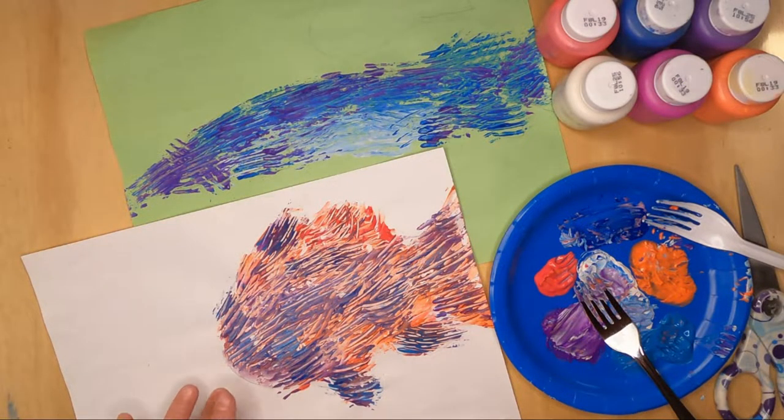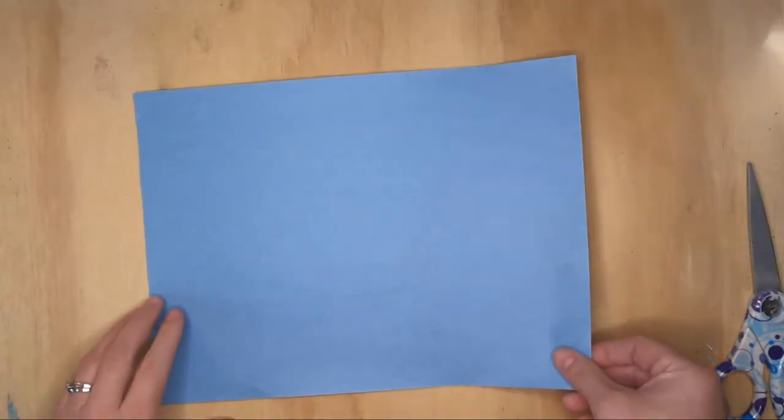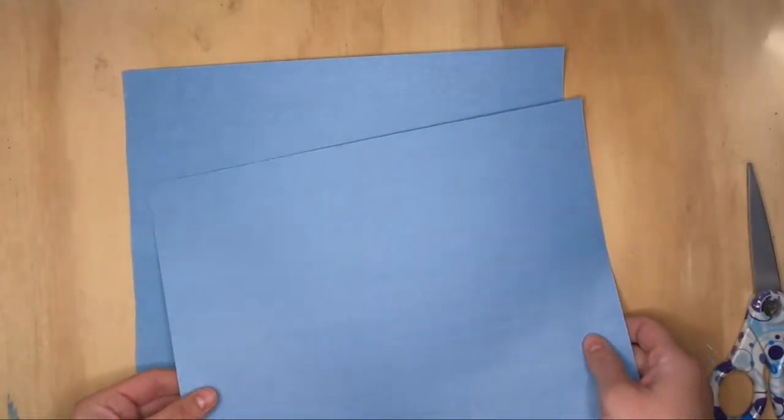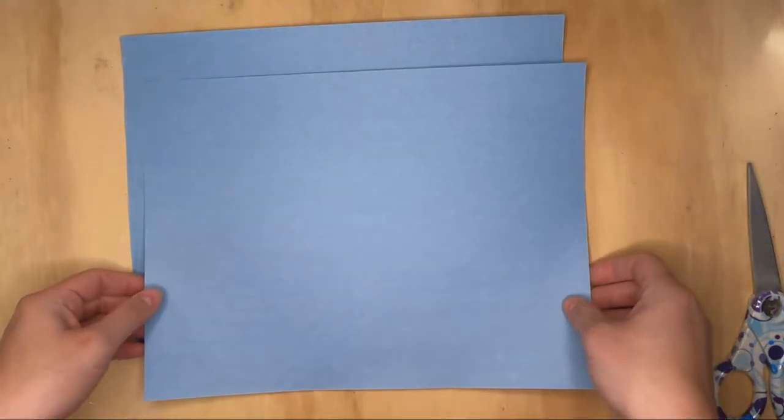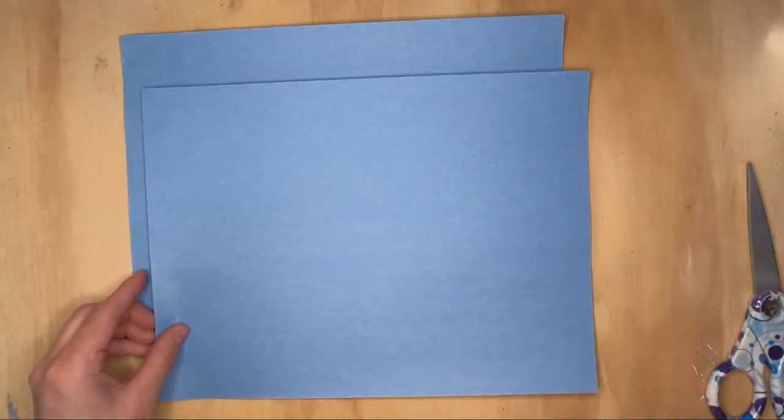All right, so while our fish are drying we're going to go ahead and put them aside and then work on a backdrop. All right, so I've got two blue sheets of paper here. It can really be any color as long as you've got imagination. I chose blue because that's the color of water.